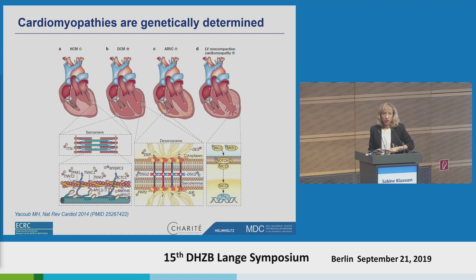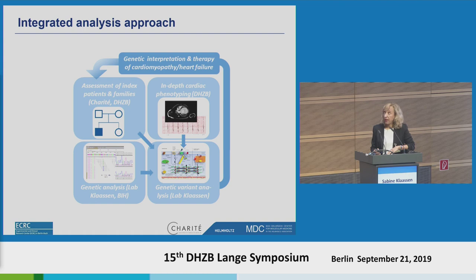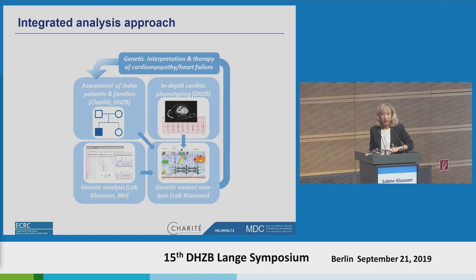When we look at children or adults, many of these gene mutations are found in children as well as in adults. Rather than an overview of all the literature, I'll go straight into our own data. In our setup, we try to approach the problem by looking at genotypes and phenotypes — this is our integrated analysis approach here in Berlin. First, we assess patients and their families, then do in-depth cardiac phenotyping, genetic analysis, variant interpretation, and hopefully give advice back to patients and families.